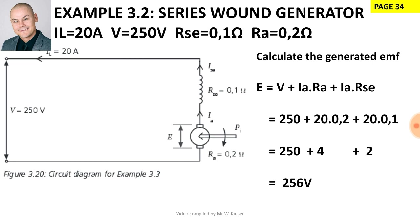The next example is a series-wound generator. A series-wound generator delivers 20 amperes at 250 volts to a certain load. The series field and armature resistances are 0.1 ohms and 0.2 ohms respectively. Calculate the magnitude of the generated EMF. In a series circuit, current stays the same and voltage is divided, so the generated EMF has three volt drops: terminal voltage (250 V), volt drop across the armature, and volt drop across the series winding. Current remains the same, so armature current equals supply current.